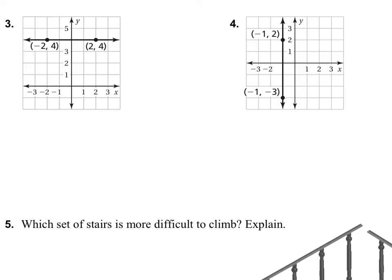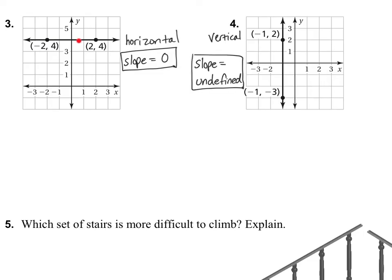Let's look at number 3. I notice it's a completely horizontal line. Horizontal lines always have zero slope, so the slope equals 0 — I don't even need to count it. Number 4 is a vertical line, and vertical lines have undefined slope, so the slope equals undefined. You can't draw a triangle on either of these — you can't go up and over for a horizontal or vertical line. So if it's horizontal the slope is 0, and if it's vertical the slope is undefined.